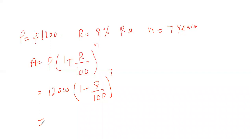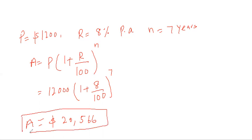For students appearing for their IGCSE exam — both P2 and P4 papers — you are allowed to use a calculator, so don't overcomplicate the calculation. Working this out gives you approximately 20,566. This is the total amount you will have at the end of seven years with compound interest, compared to 18,720 with simple interest.